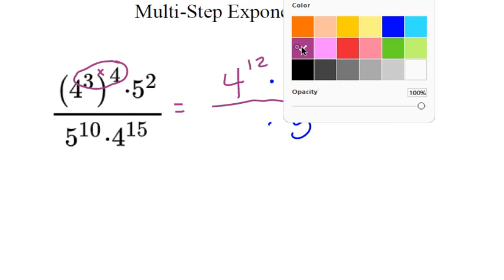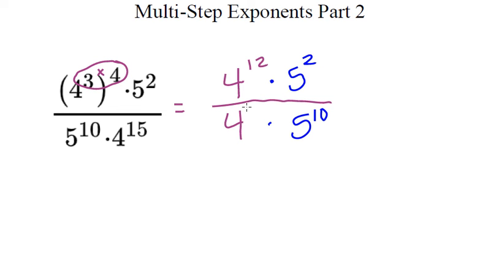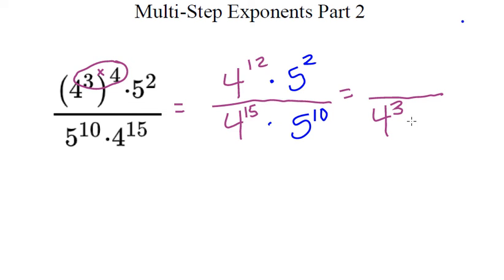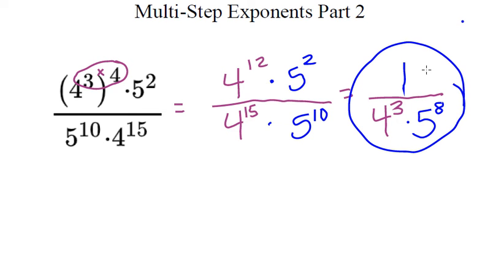And then I still have 4 to the 15th. Now when I go to simplify, I think about where the 4 goes by whether 12 or 15 is bigger. 15 is bigger, so 4 stays in the denominator, and 15 minus 12 is 3, so it's 4 to the power of 3. Then I deal with my 5 — that's 2 and 10. 10 is bigger than 2, so my 5 is also in the denominator, and 10 minus 2 is 8. When both terms are in the denominator, you have to use the placeholder 1. So your final answer is 1 over 4 to the 3rd power times 5 to the 8th power.